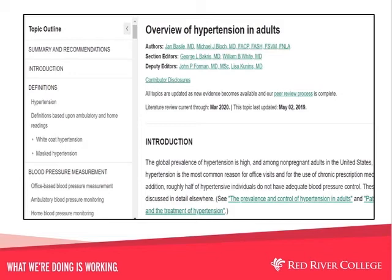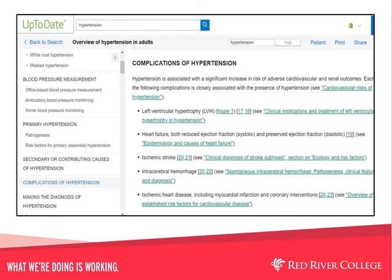Scrolling through the topic outline on the left side of the screen gives you an overview of the document's contents. In the outline you can find definitions, society guideline links, information for patients, graphics including tables and figures, calculators, references, and related topics. Click on any section of interest and the specific section appears in the larger window. As you scroll through the document, you will notice that the topic outline moves to reflect where you are in the document.